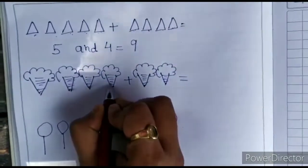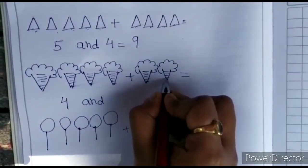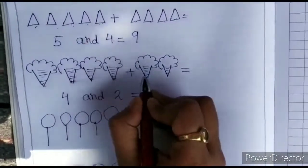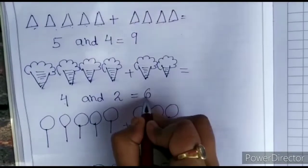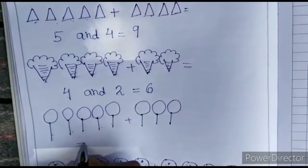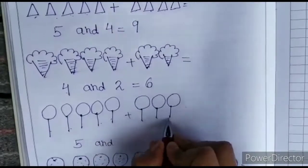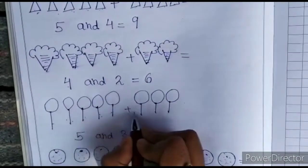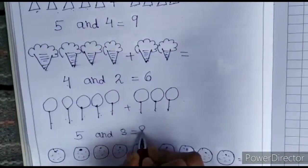Ice cream. One side 4. 1, 2, 3, 4, 5, 6. 4 plus 2 is equals to 6. 1, 2, 3, 4, 5. 5 value one side. And second side. 1, 2, 3, 4, 5, 6, 7, 8. 5 and 3 is equals to 8.